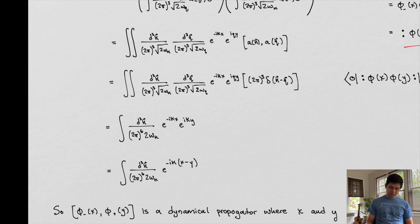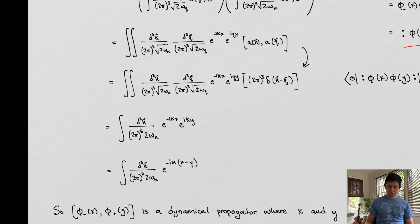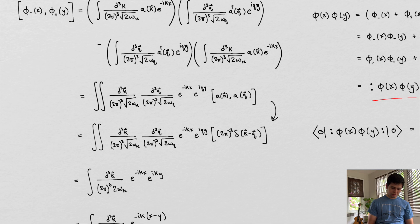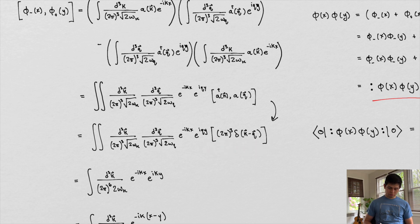To get from this step to this step, this is just a change using the commutation relationship, which is something we've derived before. This is a scalar field we're looking at, and I'm realizing right now that there needs to be a dagger right here. From this commutation relationship, this commutation relationship looks like this — something we've derived before. So we have this relationship now.